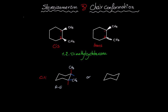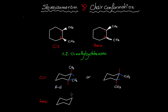Or we can consider another chair conformation. Drawing the axial and equatorial bonds, if we choose to place the CH₃ on an equatorial on the first carbon, then the CH₃ on the second carbon will be on the axial.